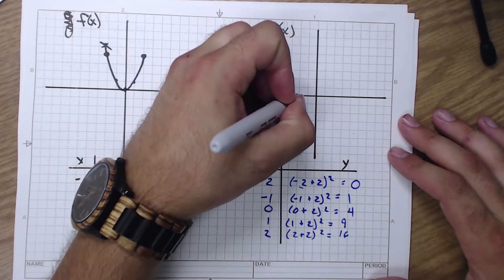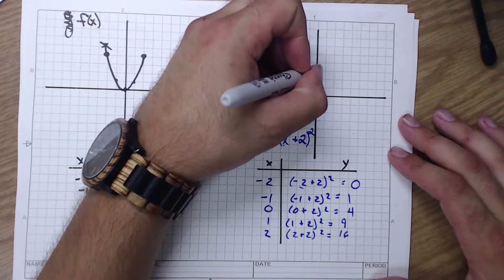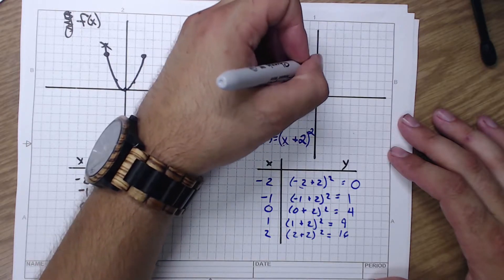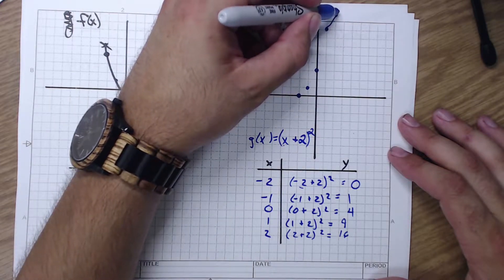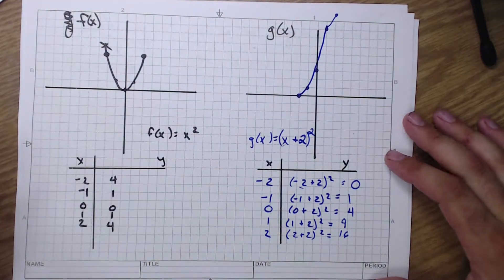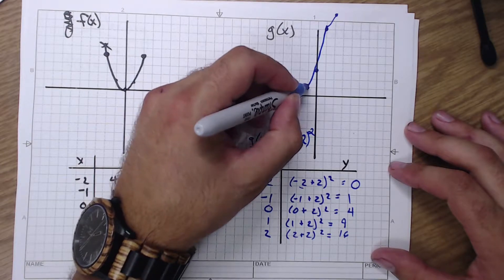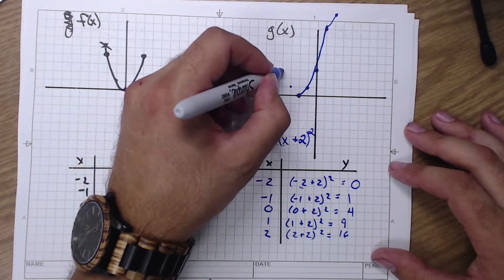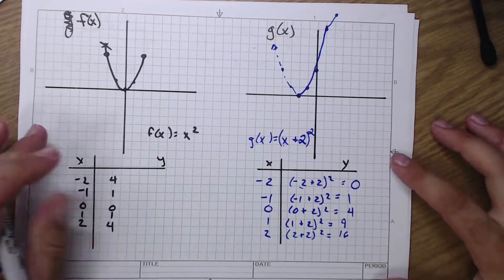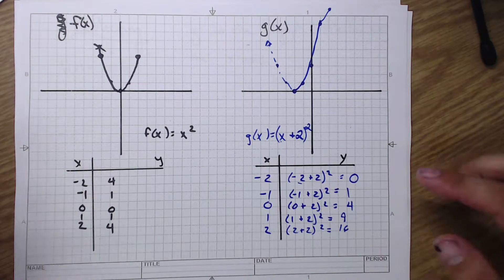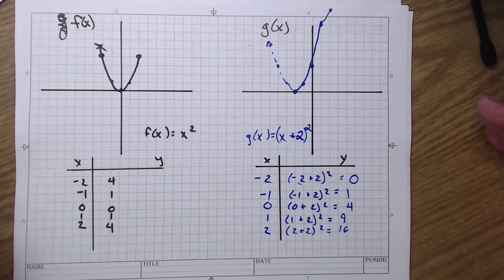Plug in a negative one. Negative one plugged in plus two squared is one. All right, now that we've got all of those on there, let's plot those points. Negative two is at zero. Negative one is up at one. Zero is at four. One is five, six, seven, eight, nine. And then it goes off my page. So I'm just going to kind of do that right now. That's what my graph looks like. But it looks kind of weird, right? That's not even what I wanted.